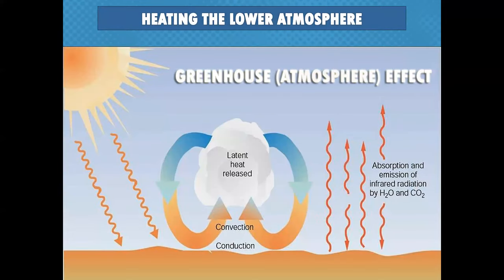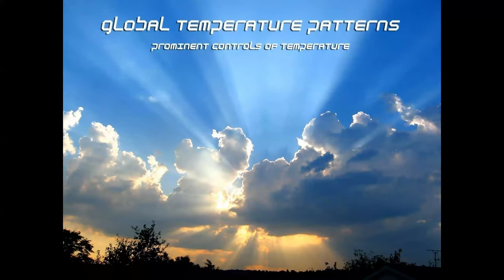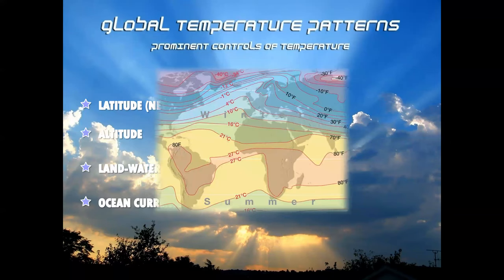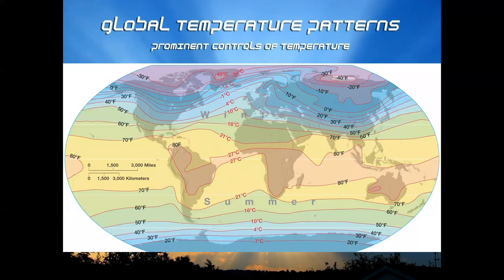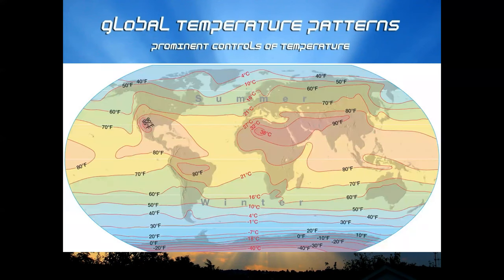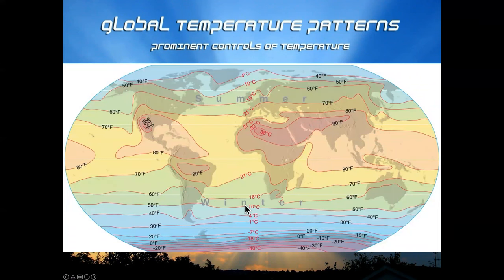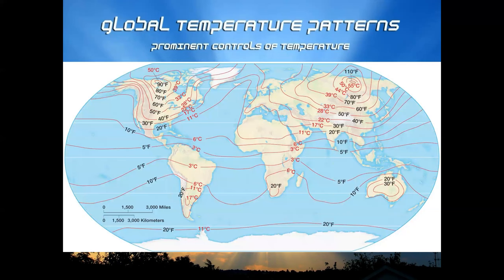The greenhouse effect involves heating the lower atmosphere through a combination of convection, conduction, and latent heat release. The controls of temperature include latitude, altitude, proximity or distance from water, and ocean currents. Here's the idea of latitude — notice how it shows summer versus winter, and what happens as you go from month to month.